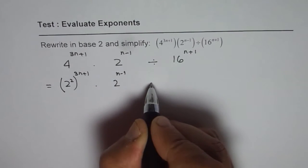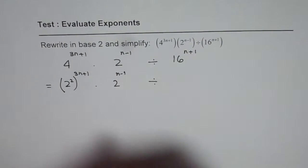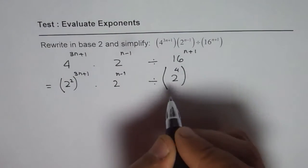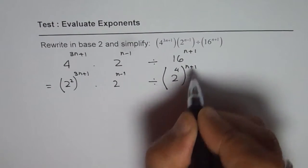We need 2 as the base. Divided by, 16 is 2 to the power of 4. So 2 to the power of 4 to the power of n plus 1.